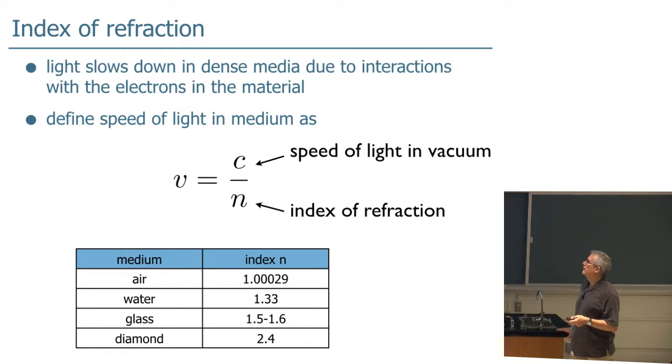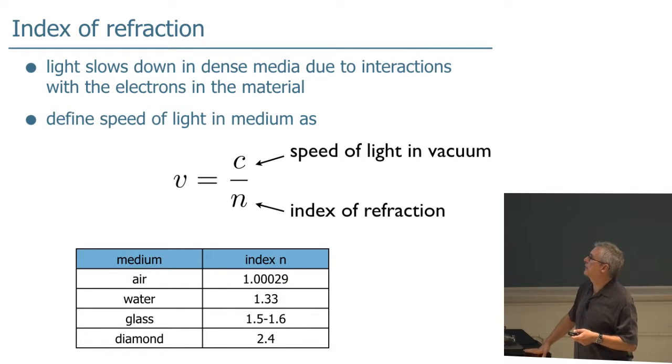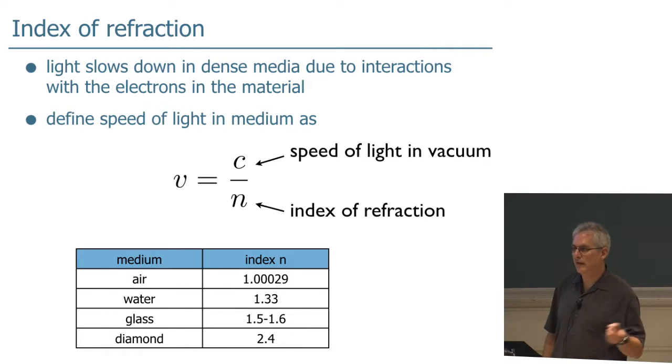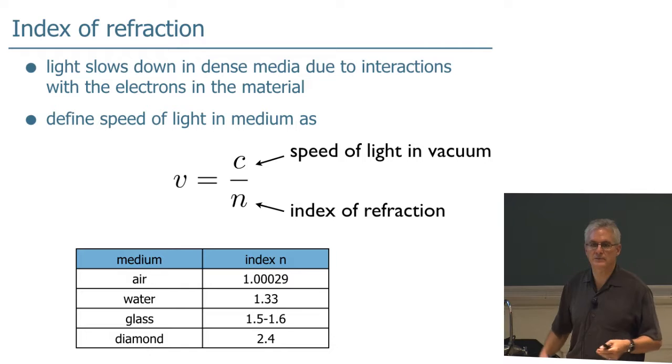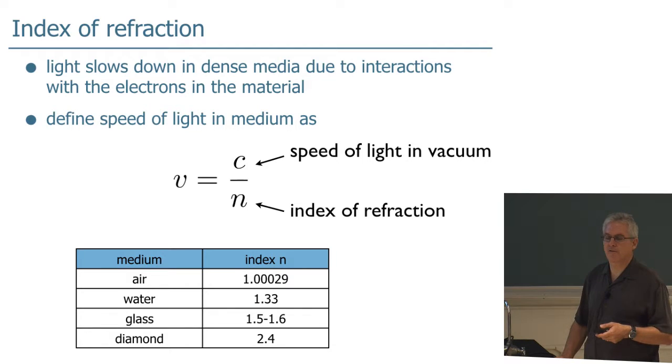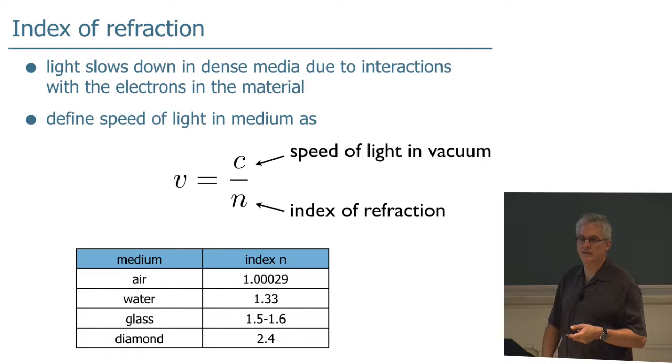Specifically for light, light slows down in a dense medium due to interactions with the electrons in the material. Light traveling in a vacuum goes 3 times 10 to the 8th meters per second. That's c, the speed of light in a vacuum. But the velocity of light in a different material, like air or water or glass, goes down by a factor N. N is usually the symbol we use for the index of refraction of a material. Air has 1.00029 as the index of refraction, so we basically treat the speed of light in air as being basically the same as in a vacuum.